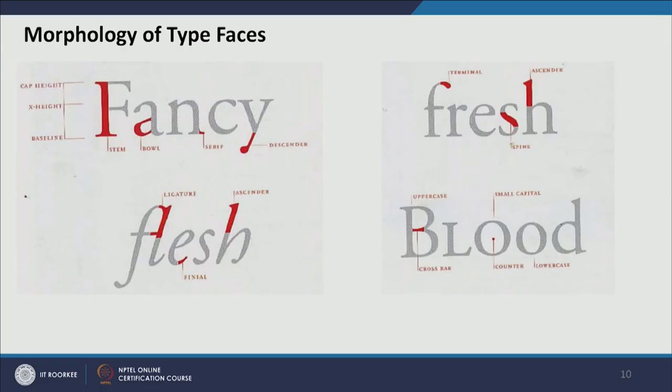Now we come to the morphology of typefaces — how we recognize a typeface by its different parts. We should also discuss the difference between 'font' and 'typeface': Times New Roman is one typeface, but each individual alphabet of Times New Roman is one font. There is a slight but important difference between the two terms in design.